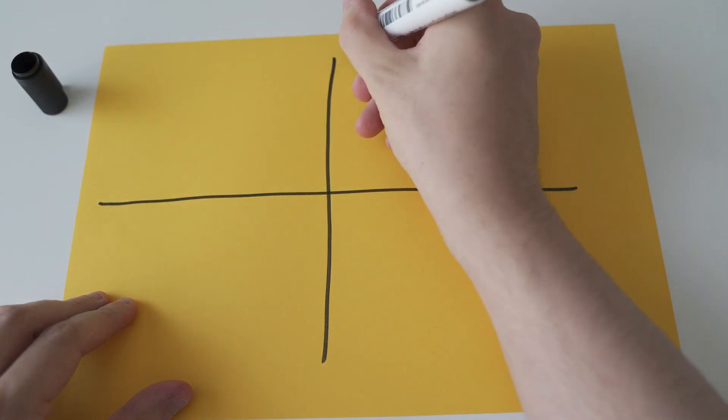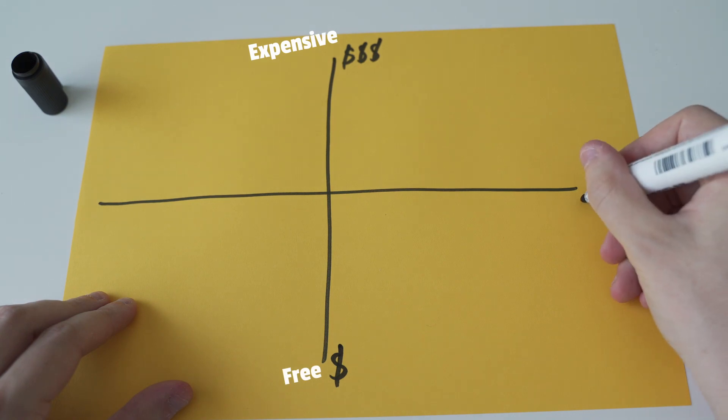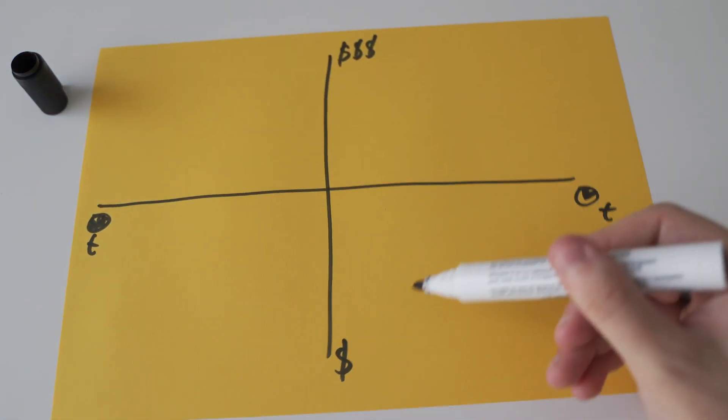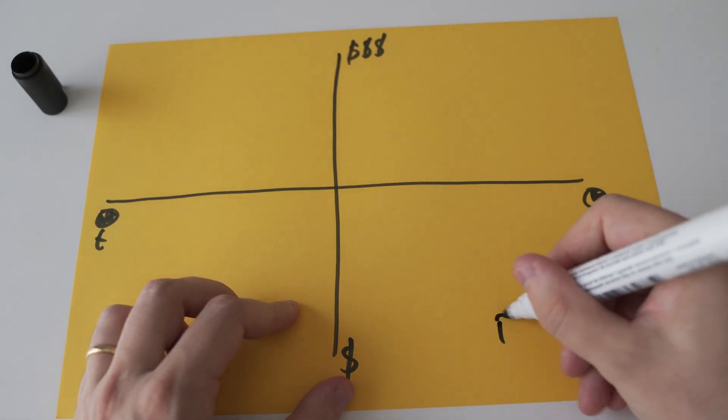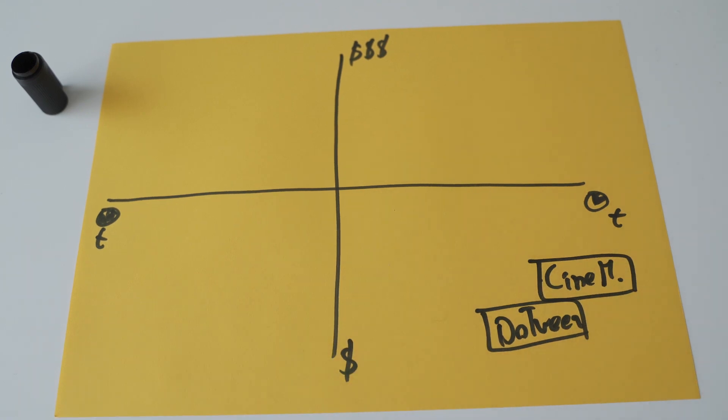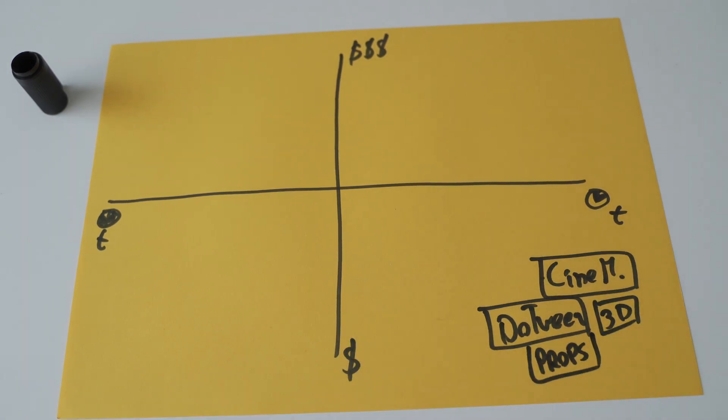We can map assets by price and amount of time it saves you. Let's start with the perfect category. The asset is free and saves you time. Yes, they do exist. Like Dootrine or Cinemachine. You also find free props, models, textures here as well. Those are the kind of assets that you will be adding to every new Unity project.